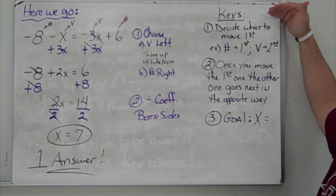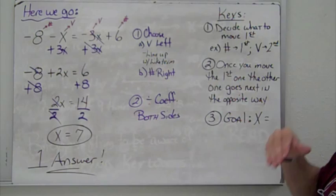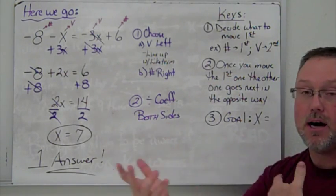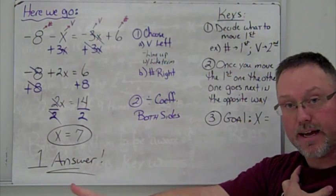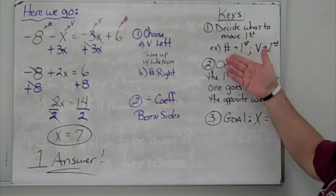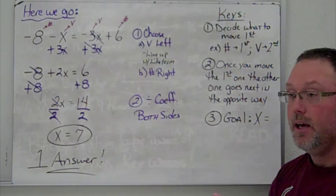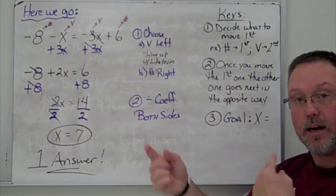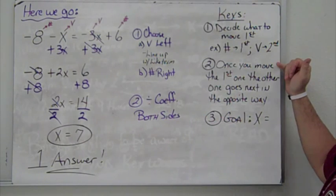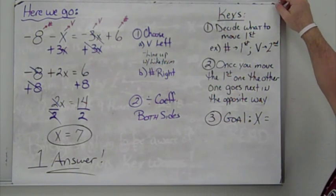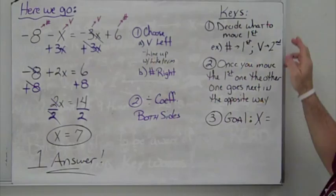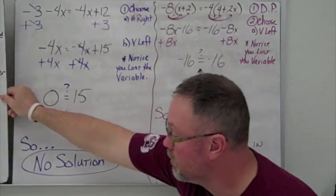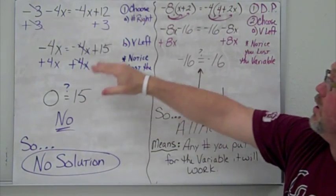Some keys to remember: decide what to move first. To stay positive, try to move the largest negative away. Move the number first, variable second — or if you move the variable first, the number goes next. They go in opposite directions as you work through. Your goal is always to get x, or your variable, by itself.